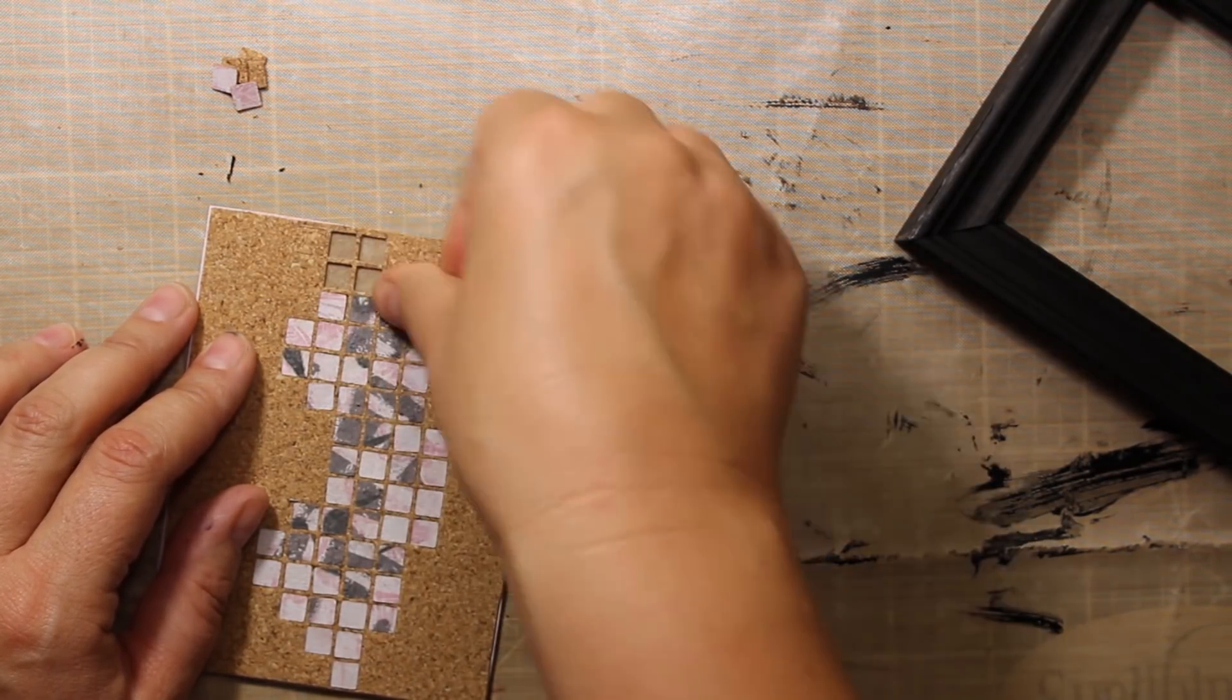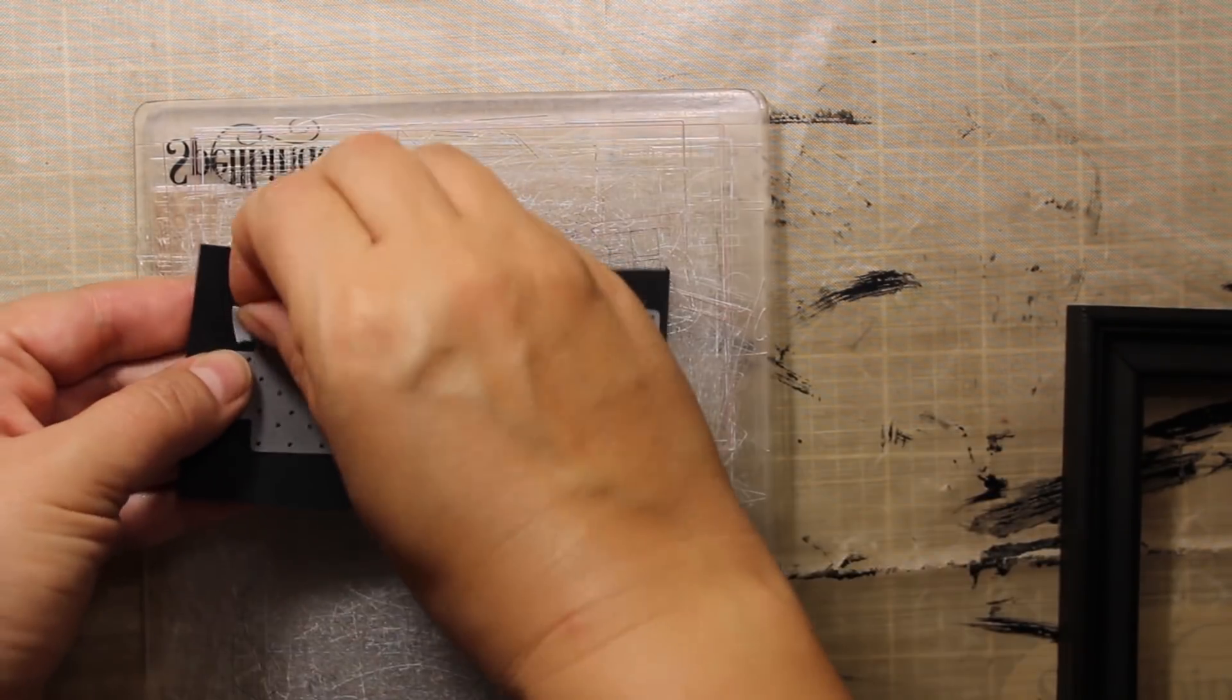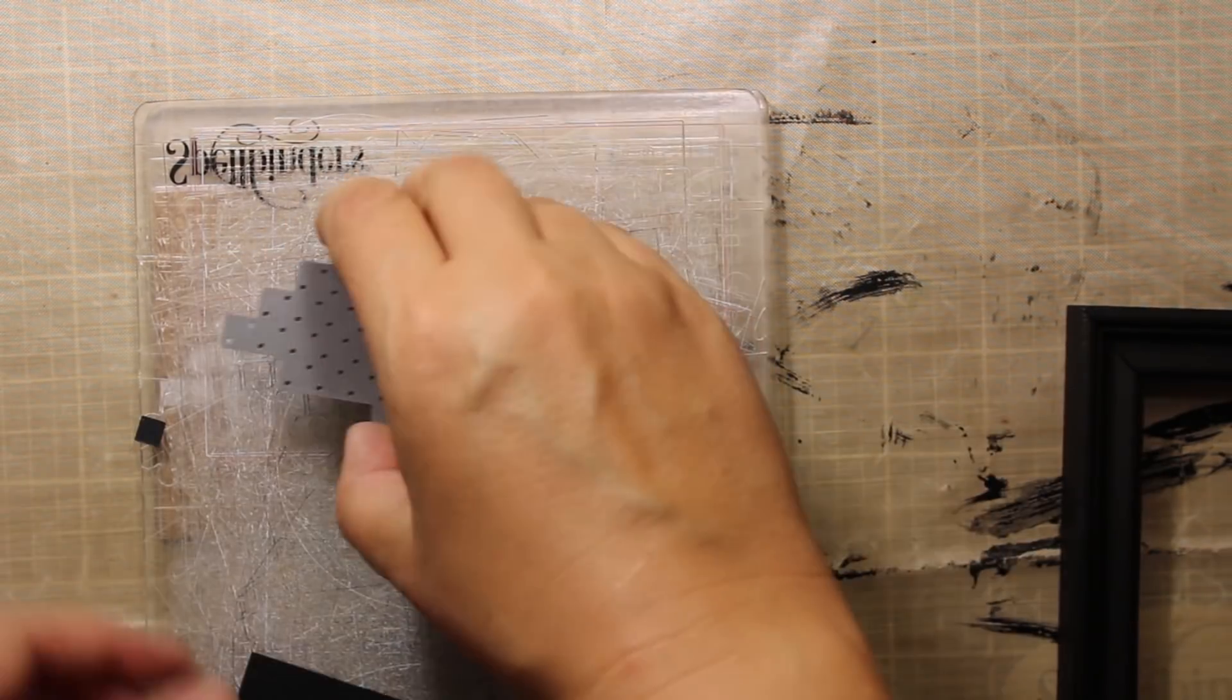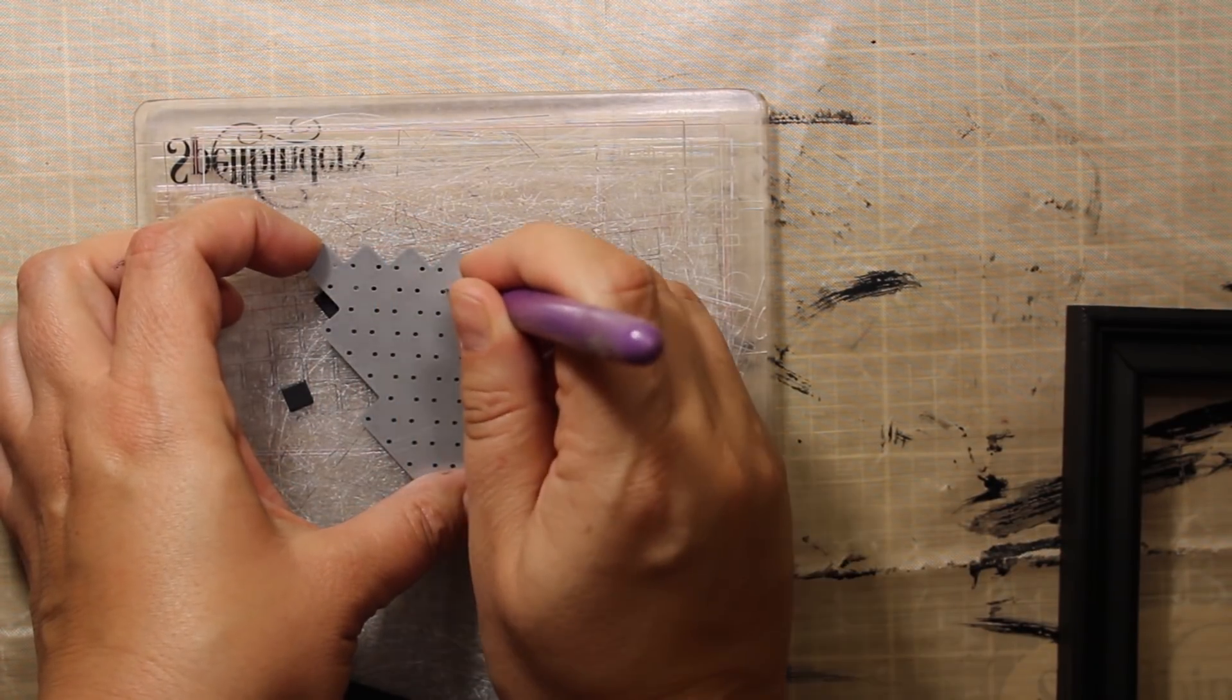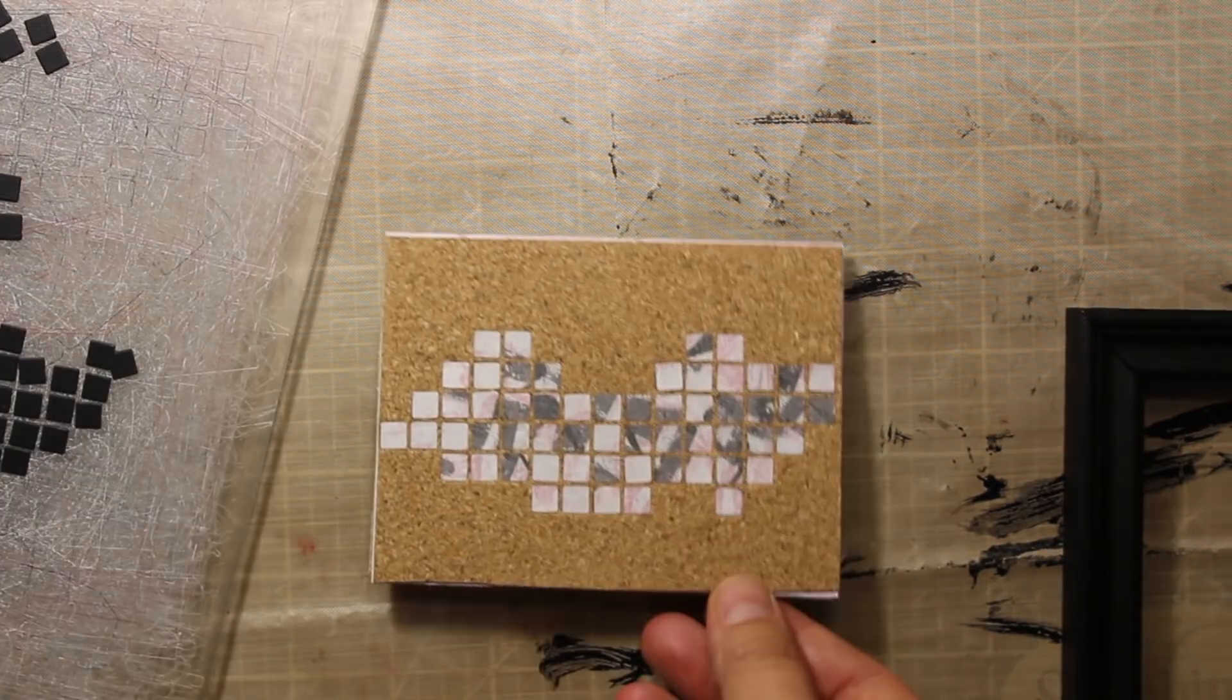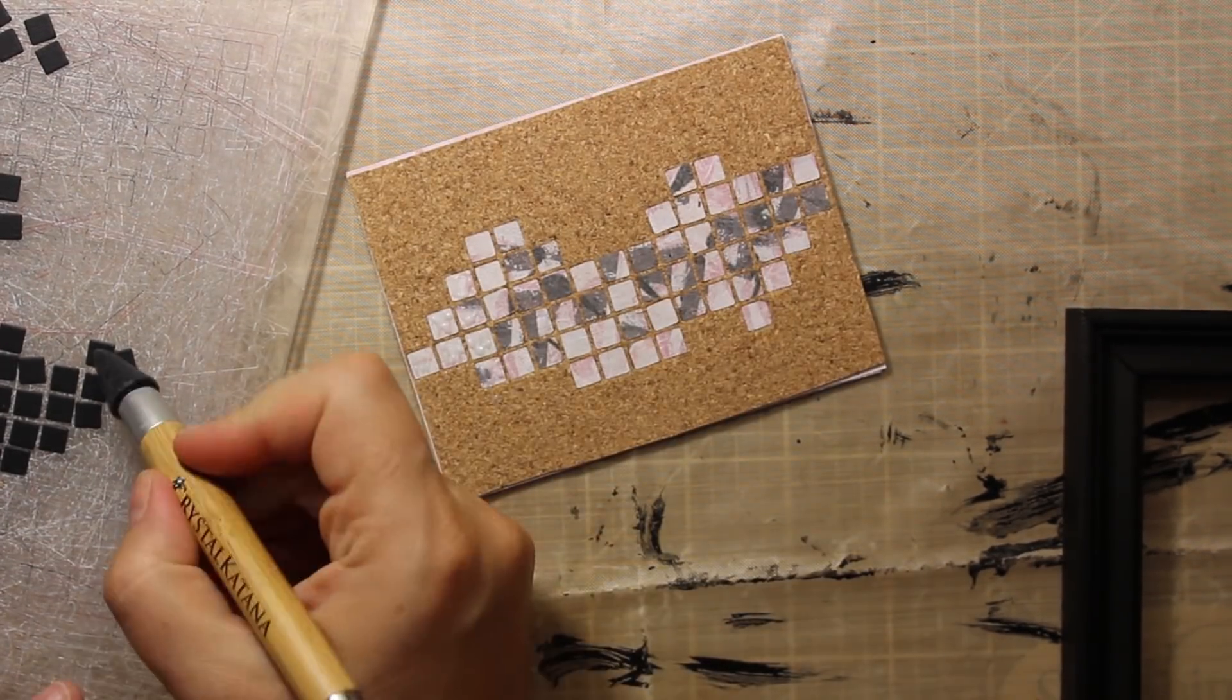After I have inlaid all the tiles I'm going to create that additional layer that I was talking about. I simply die-cut the same collage die out of a piece of black cardstock. Then I'm simply going to apply some glue onto each of the tiles and stick the black squares on top. The liquid glue I'm using is Ranger Multi Medium Matte.